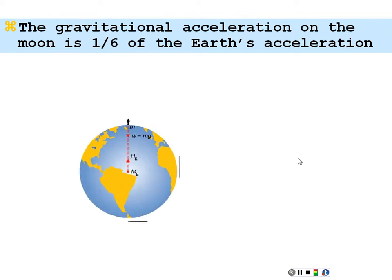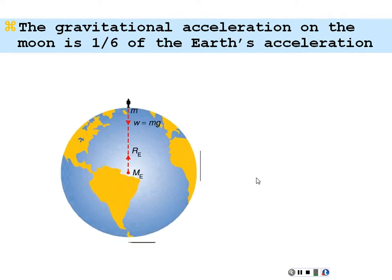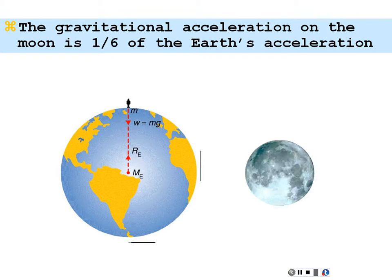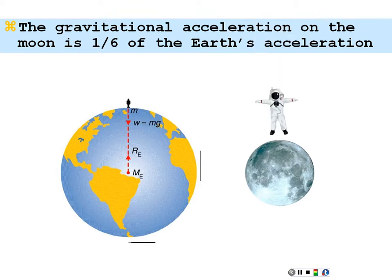The gravitational acceleration on the Moon is one-sixth that of the Earth. So if you went to the Moon, you would only feel like you weighed one-sixth as much because the gravitational acceleration is one-sixth as much. Your mass is the same, but your acceleration would be only one-sixth as much. The Moon is much smaller — about one-eightieth the mass of the Earth — but you're also closer to it since the Moon's radius is smaller.